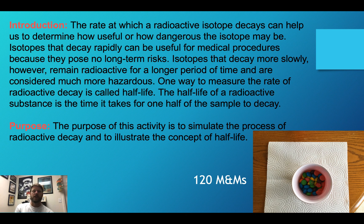One way to measure the rate of radioactive decay is called half-life. The half-life of a radioactive substance is the time it takes for half of a sample to decay.